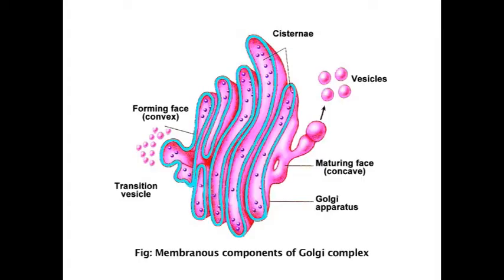Under the observation of electron microscope, the Golgi complex is shown to contain three membranous components having different forms. They are cisternae — flattened sacs arranged in parallel and separated by spaces of 20 to 30 micrometers. Each cisternae has an intra-cisternae space of 150 Angstroms which remains bounded by the unit membrane.